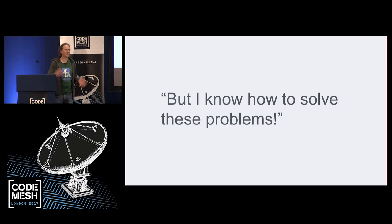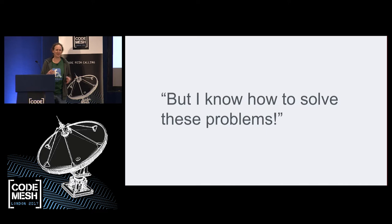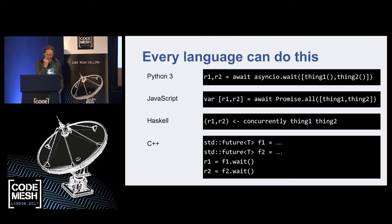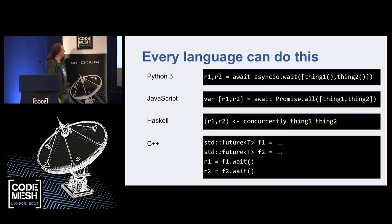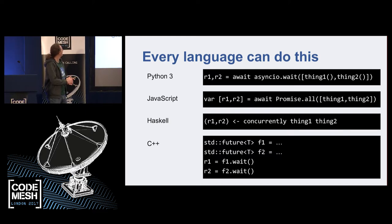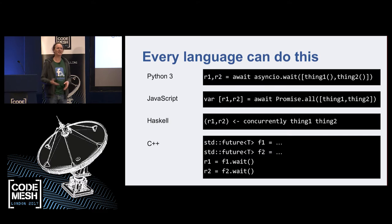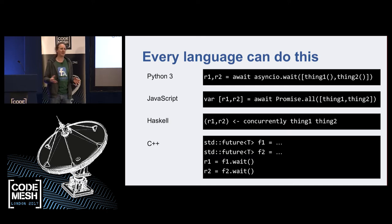Maybe you're thinking: these are all trivial things — I do these things all the time. I know how to do concurrency, I know how to test my code, I know how to debug problems. And that's absolutely right. Every language has some way of doing concurrency. In Python we've got asynchronous I/O. JavaScript has an asynchronous thing. Haskell has lightweight threads and various abstractions. C++ has various things including futures. These are all good ways of overlapping I/O. The async/await style APIs that we see a lot these days are very popular ways of overlapping I/O without heavyweight threads.